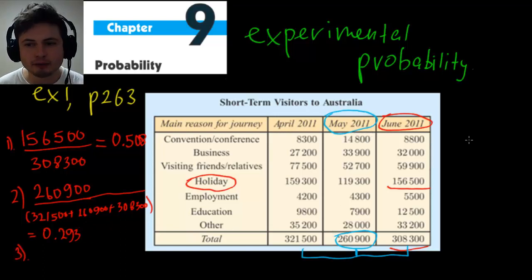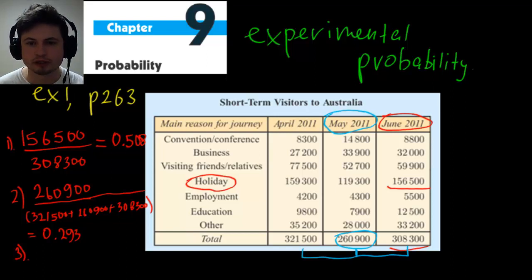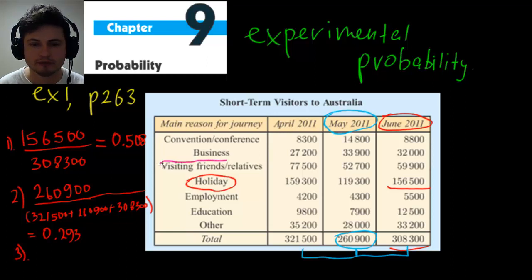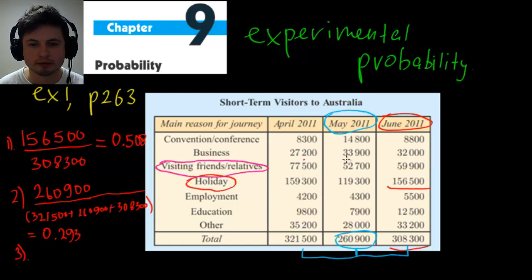The last question is tricky because of the way it's worded. A person named Loris came to visit Australia in April, May, or June — we don't know which month — and he came for one reason: to visit a brother, i.e., visiting relatives. The question asks what is the chance he came in April.